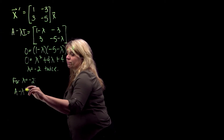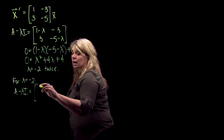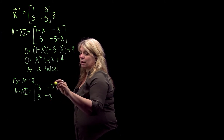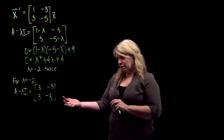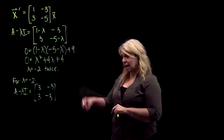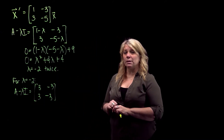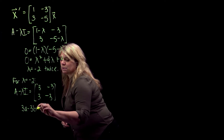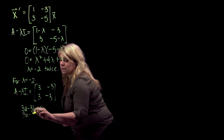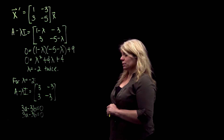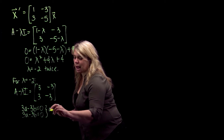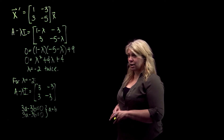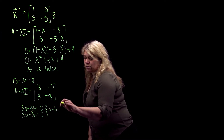Substituting lambda equals negative 2, we get the matrix with entries 3, negative 3, 3, and negative 5 minus negative 2, so negative 3. Writing out the system of equations: 3a minus 3b equals 0. The second row gives the same equation again, which is what we expect — same equation twice. Both can be rewritten as a equals b. So any non-zero vector with a equals b is an eigenvector.